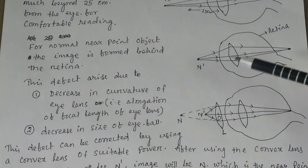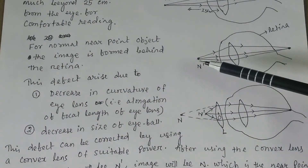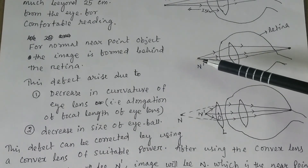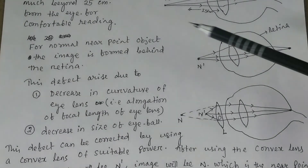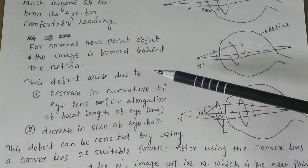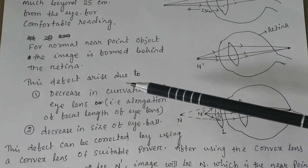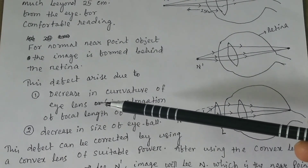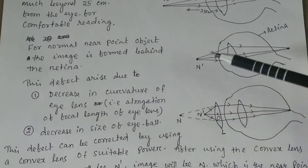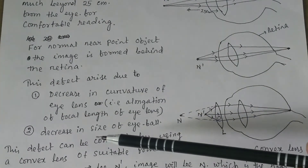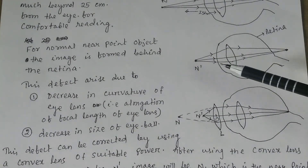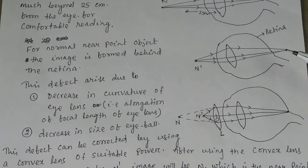For a hypermetropic person, if an object is placed at the normal near point, the image will be formed behind the retina. This defect arises due to two causes. Number one: decrease in curvature of the eye lens — if the lens becomes thin, its focal length increases. The second cause is a decrease in the size of the eyeball, which also causes the image to form behind the retina.